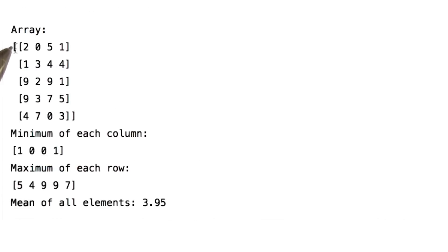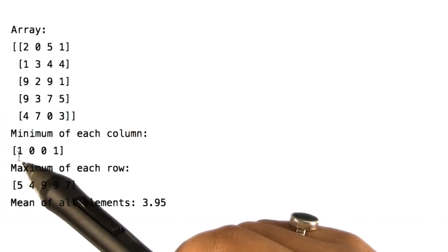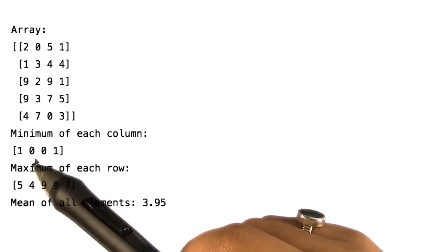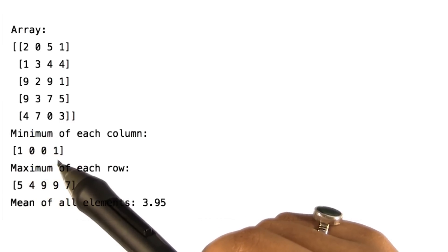Observe the output. Minimum of the first column is one which is shown over here. This value is essentially the minimum of the first column. This is of the second, this is of the third, and this is of the fourth.